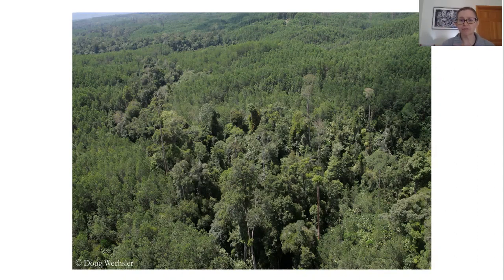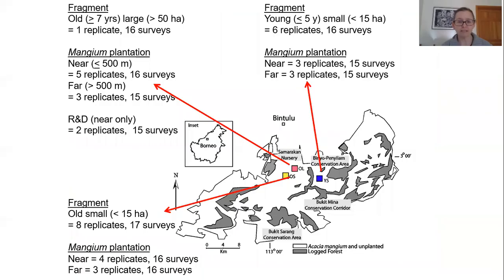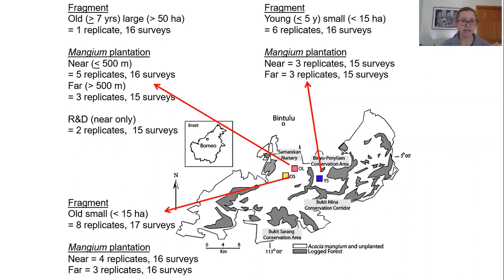Birds are moving out of the forest fragments and using old plantation stands. We looked at forest fragments and the interactions between forest fragments and old and young Acacia mangium plantation in a large mixed-use area. We surveyed several fragments of small size — less than 50 hectares — and also surveyed forest close to and far from these fragments.